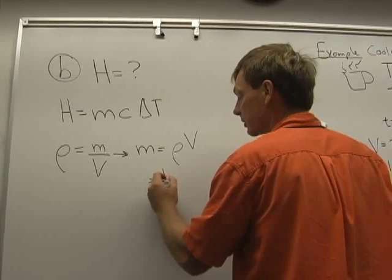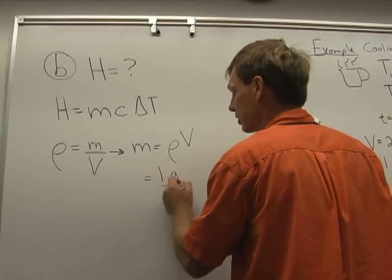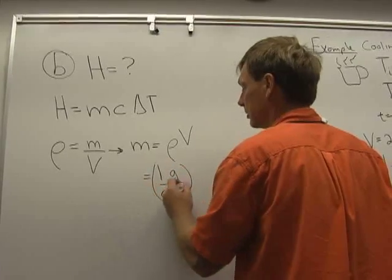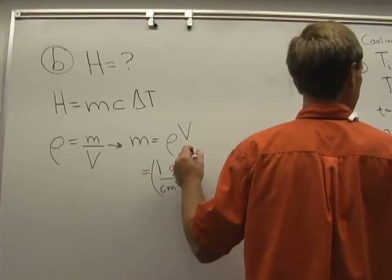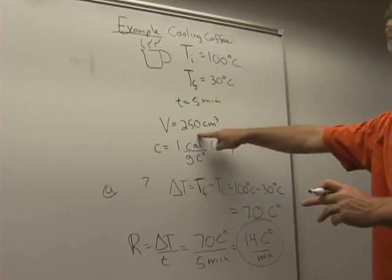It turns out that water is really nice to measure. It's one gram per cubic centimeter. That's the density. And the volume is 250 cubic centimeters.